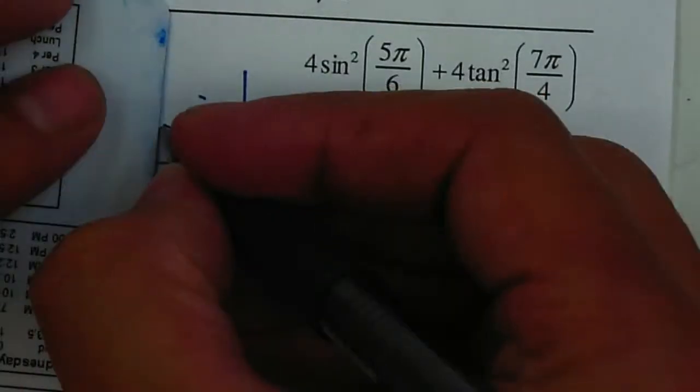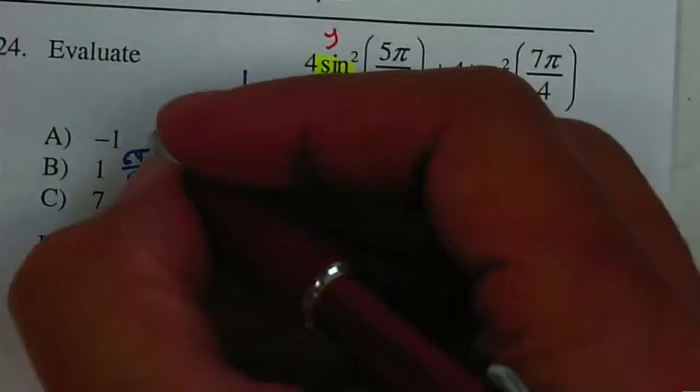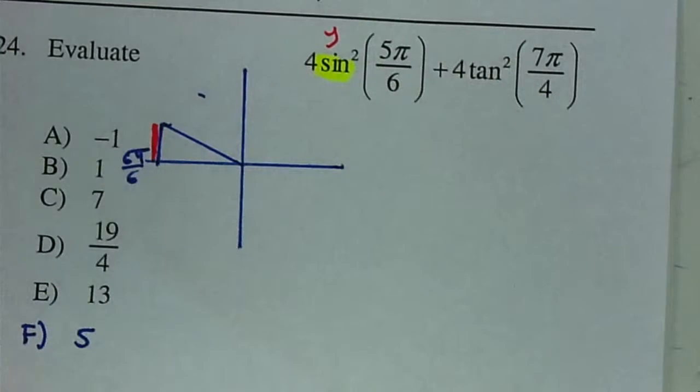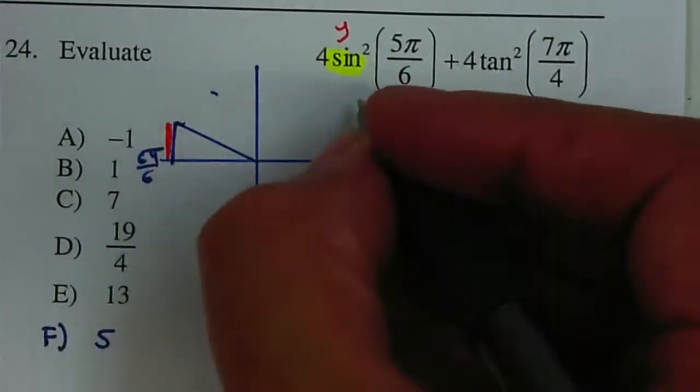And I'm looking for the sine. So you have to remember, your sine is your y value. And the y value is your shorter side. So therefore your shorter side is equal to 1 half.